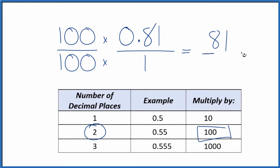100 times 1, that equals 100. And now we have a fraction, 81 over 100. So the decimal 0.81, that equals 81 over 100. This is the fraction.